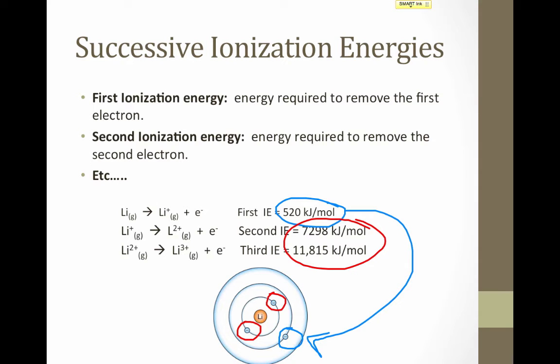Notice it requires far more energy to remove the second and third electrons since they're a whole principal energy level closer to the nucleus. However, it does require less to remove the second than the third. That's because when removing the second electron, the third electron is repelling it, giving it a little help out of the atom. Once that's gone, there's no more electrons to repel that last electron, so that takes the most energy to remove.